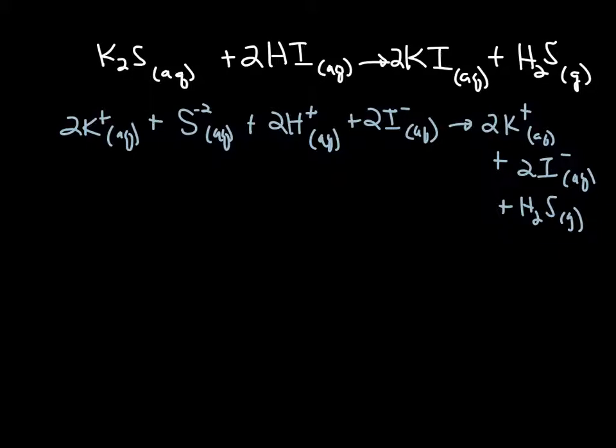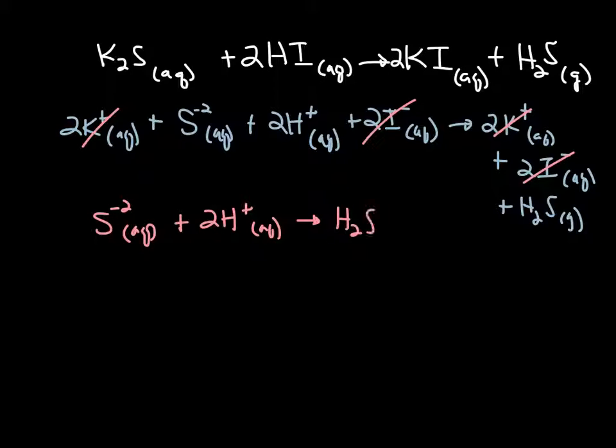So if we cross out spectators, the potassium and the iodide are our spectator ions. So our final net ionic equation will be sulfide ion, plus our 2 hydrogen ions, becoming or yielding H2S gas. All right, so that's an acid gas reaction, because we're producing a gas.